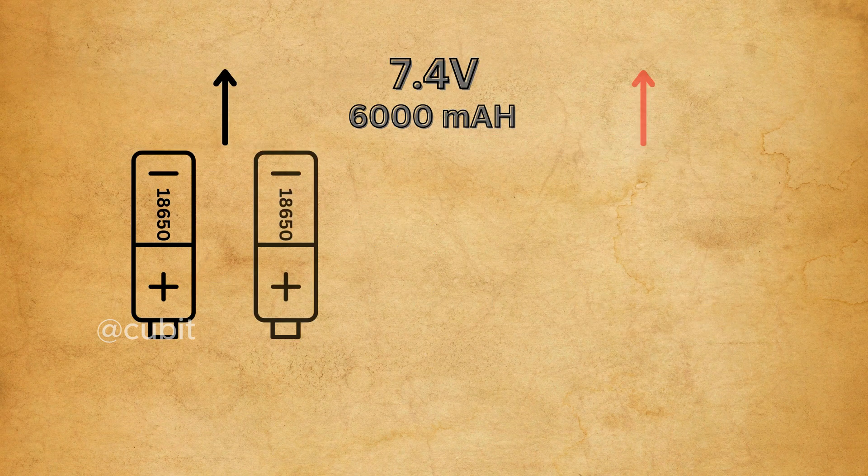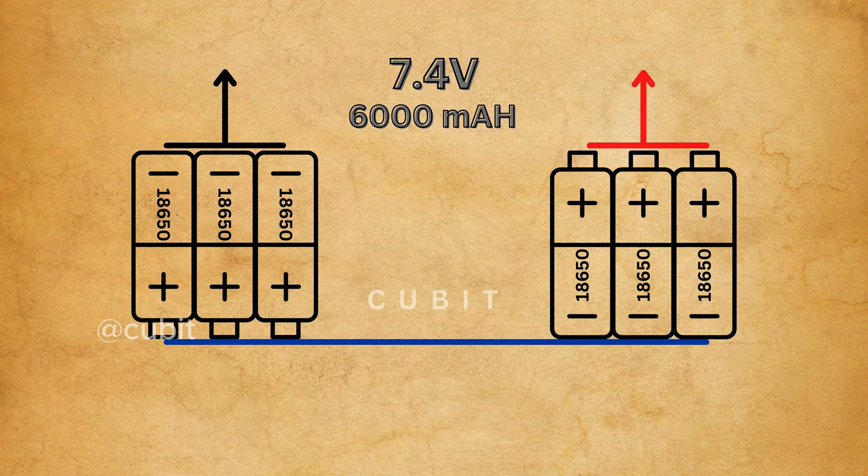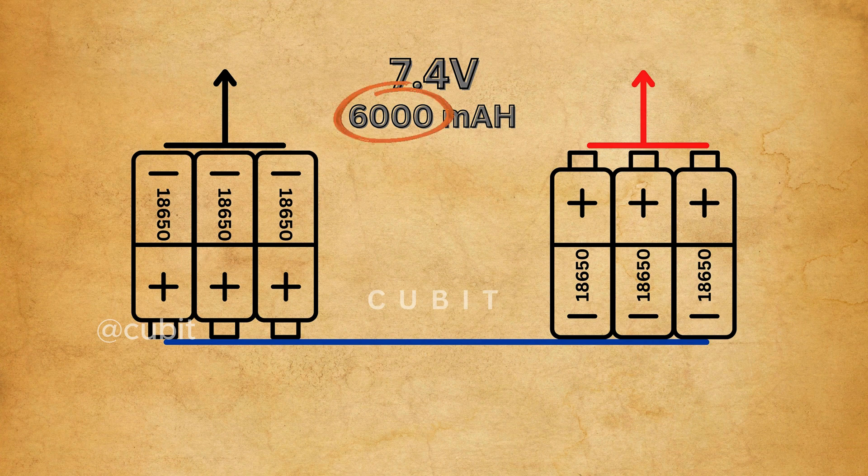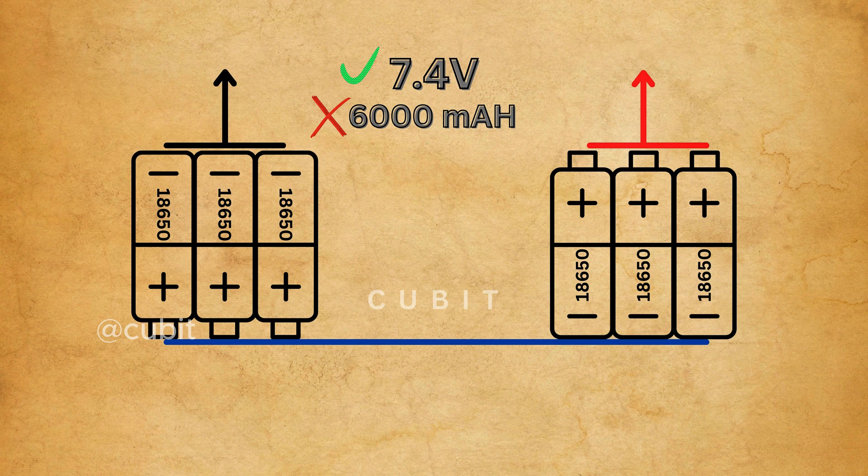We made two groups of batteries and then connected them in series. After that, the output voltage is 7.4V and the capacity remains 6000mAh. When we connect batteries in series, the voltage increases but the capacity stays constant.